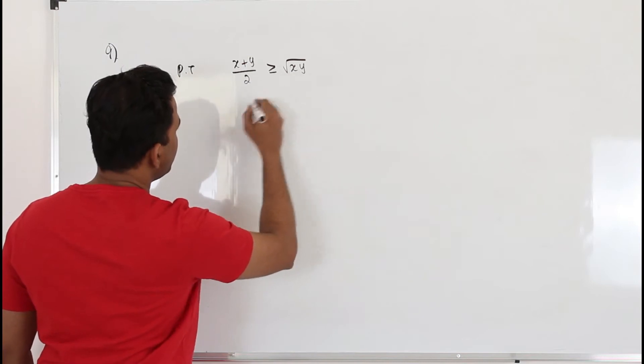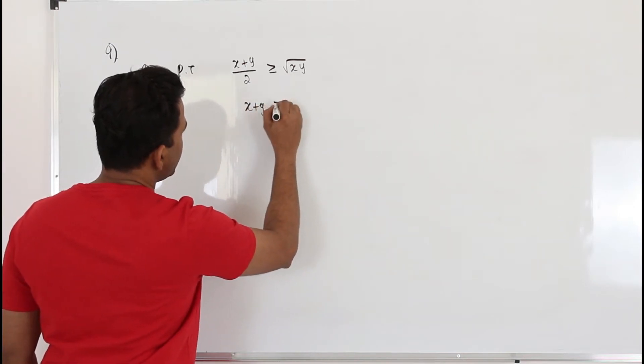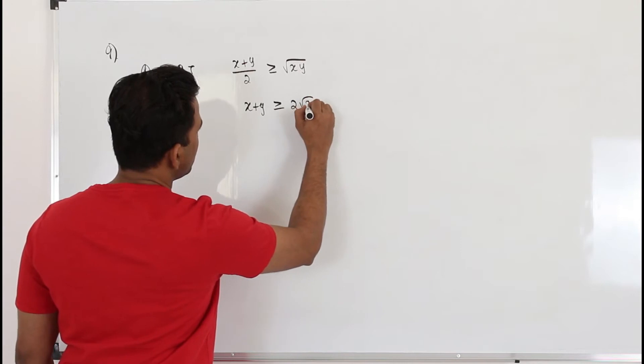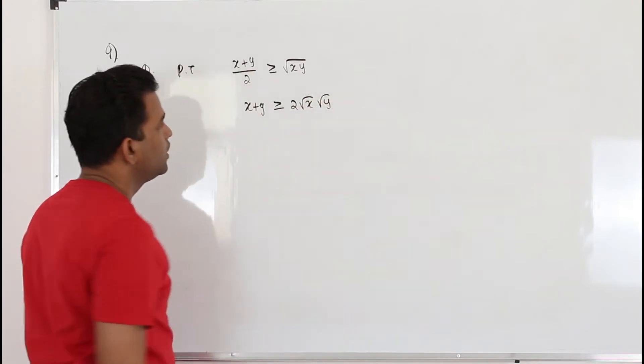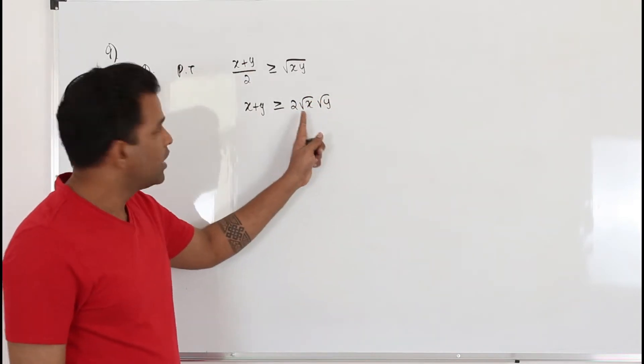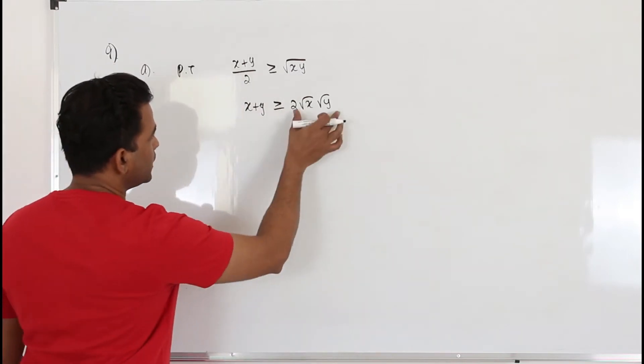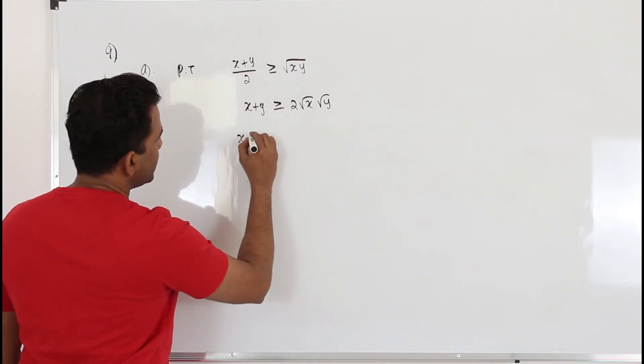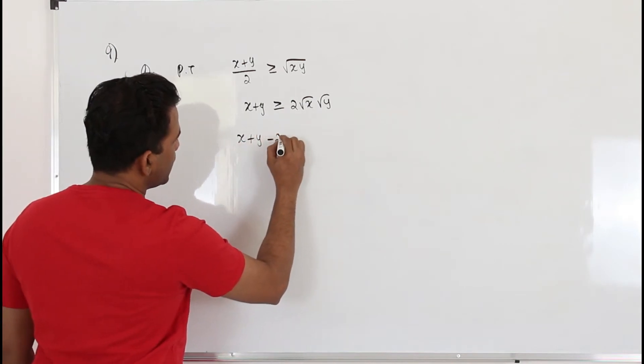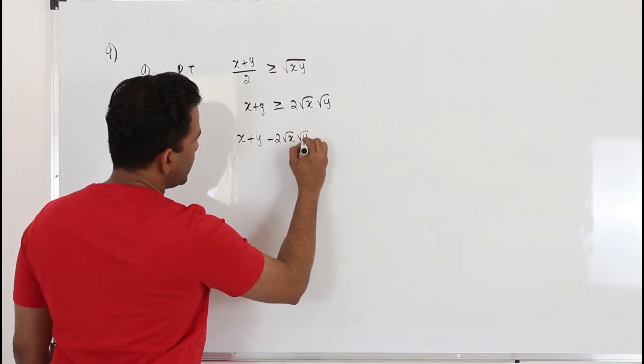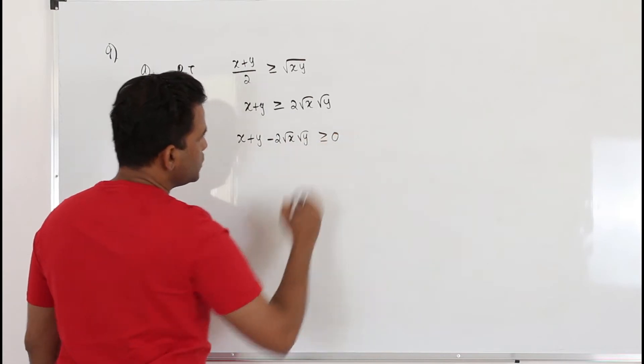You can multiply everything by 2 first. x plus y is greater than or equal to 2 square root of x times square root of y. There is a reason why I have split this into square root of x and square root of y. I will explain that. Put everything here. You get x plus y minus 2 root x root y is greater than or equal to 0.